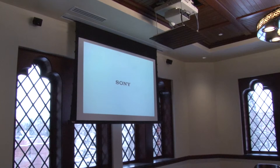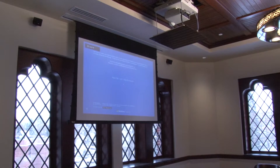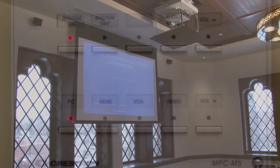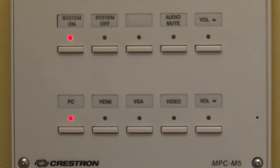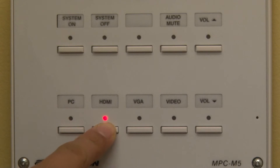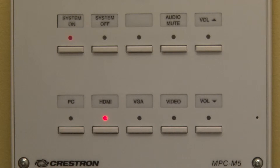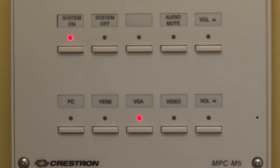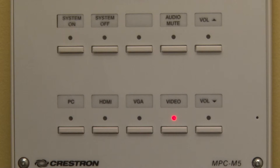The system, by default, will display the room PC input, lighting up the PC button. If you would like to use an HDMI device, select HDMI. Likewise, if you have a laptop connected via VGA, press the VGA button. If you have connected a video device, press the video button.